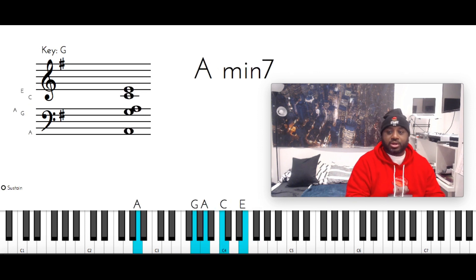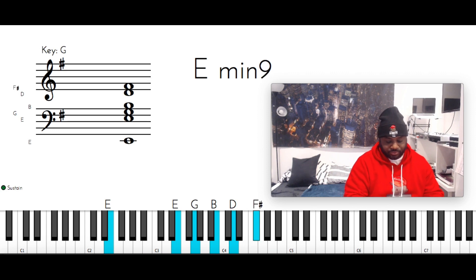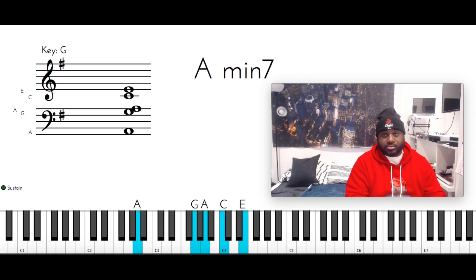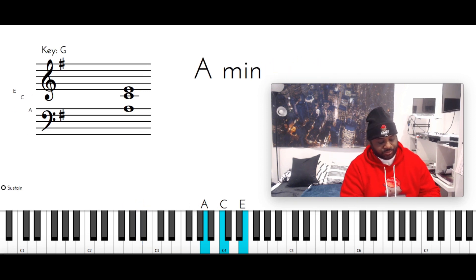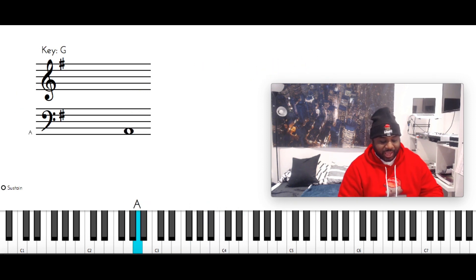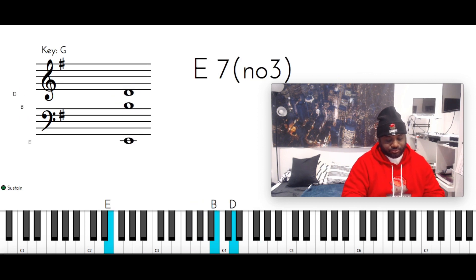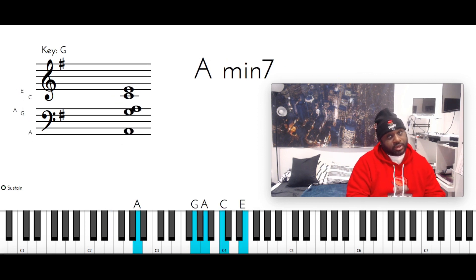Then you're going to hit that B minor again, and you're going to come to an A minor 7. A with the left, you got G, A, C, and E with the right. Now that bass run, B, A, G, A, it started again.